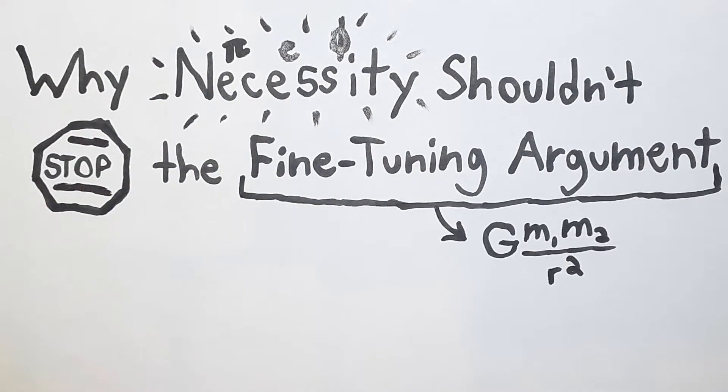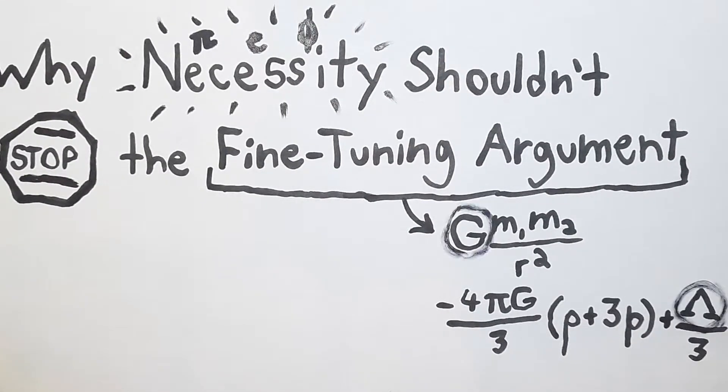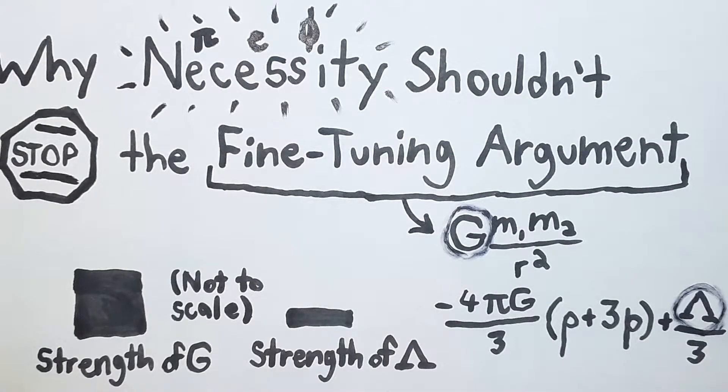You've seen those physics equations that represent the laws that describe our universe. Now in these equations some physical constants pop up. These are numbers that are just encoded into our physics and not derived by other equations. Each constant has some certain level of strength which has effects on what our universe will actually end up looking like.